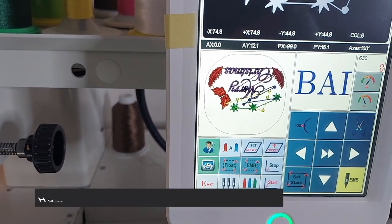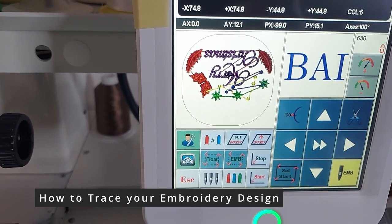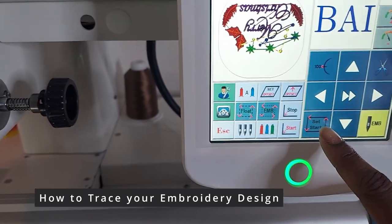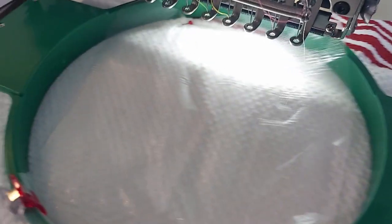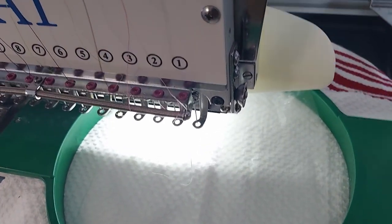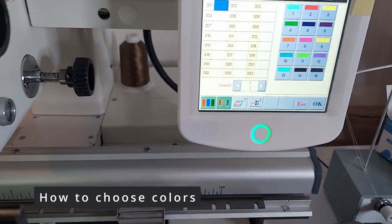Trace your design to make sure that when you start embroidering, your needles will not touch the hoop. Do this by pressing the set start icon. You can also press the float icon on your screen to trace your design.